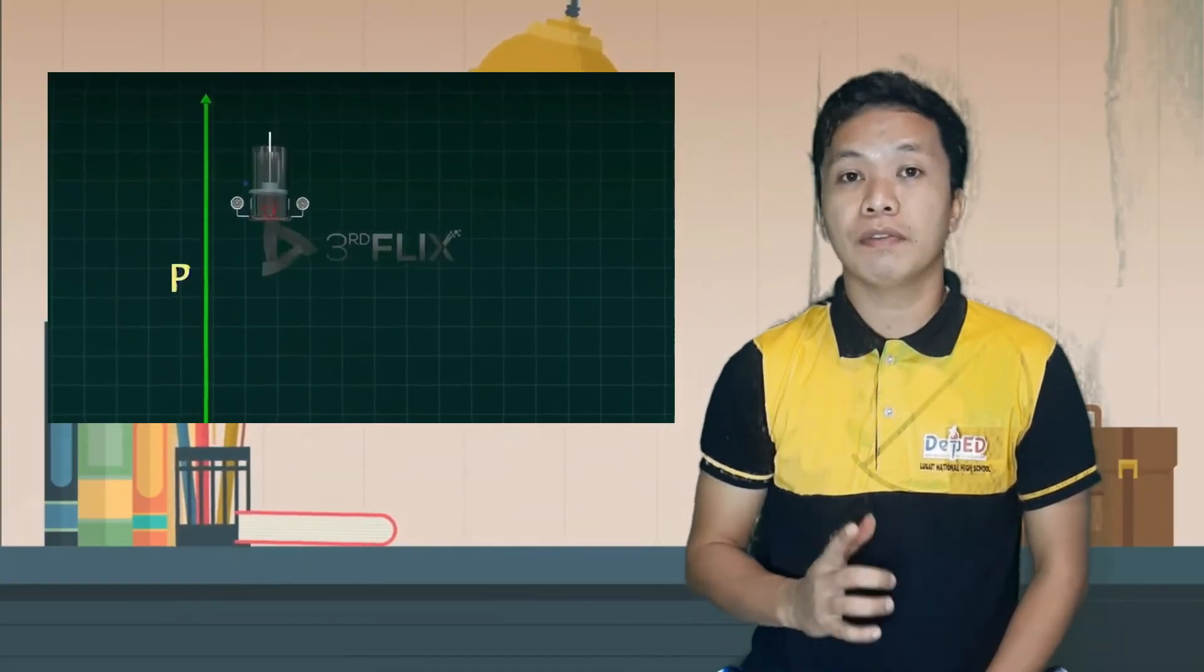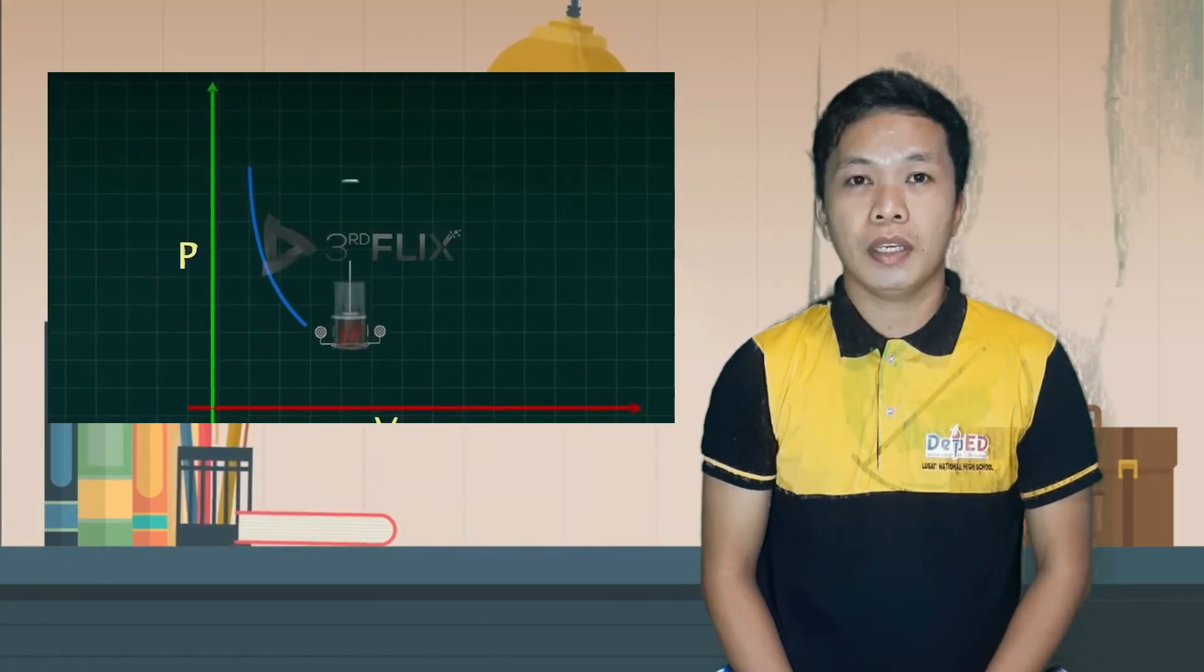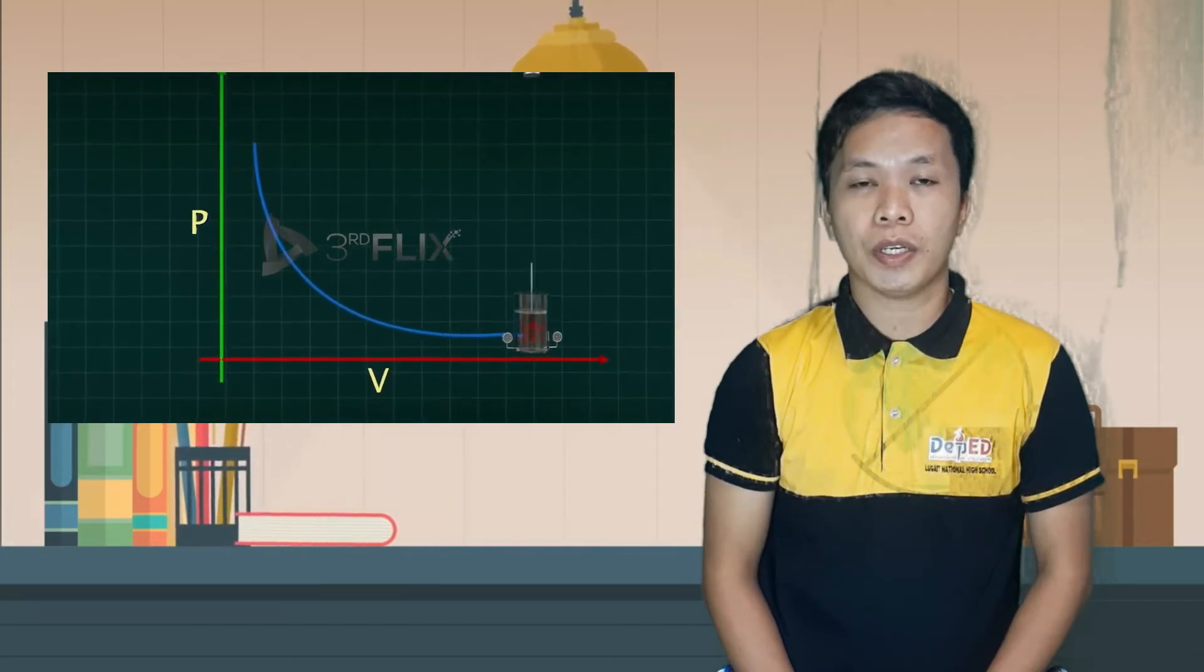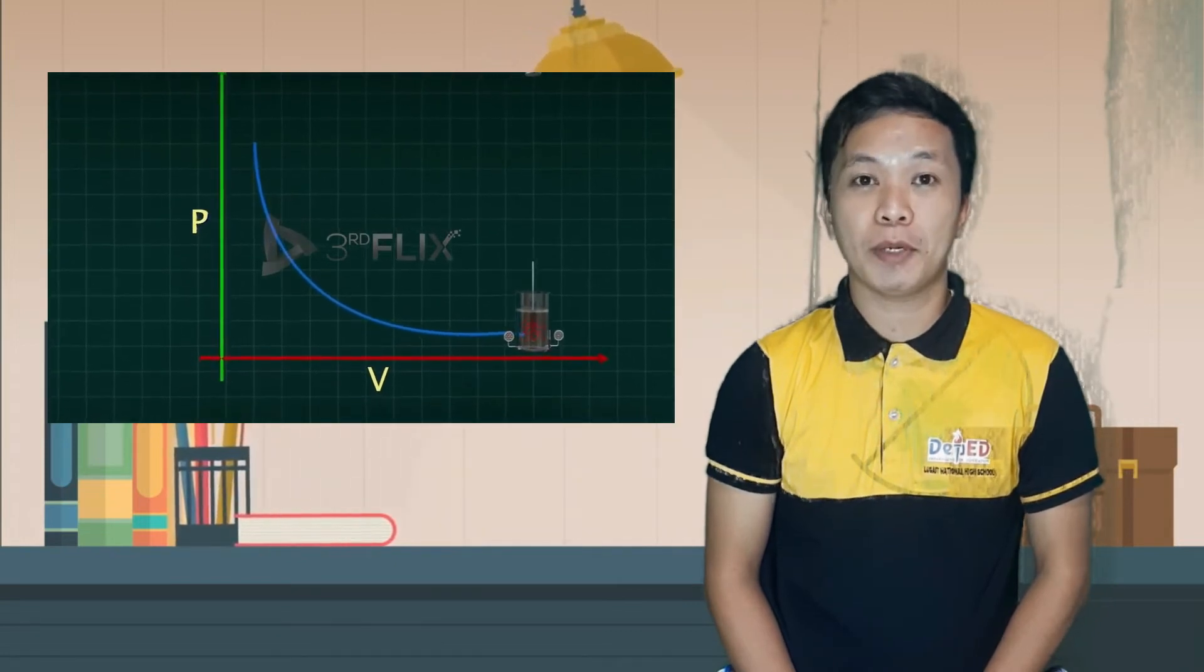This experiment is very similar to how our lungs and diaphragm works. Boyle's Law states that, at constant temperature, the volume of a gas is inversely proportional to the pressure that is applied on it. Now, let us observe this graph between pressure and volume. For a fixed amount of gas at constant temperature, if we plot the graph between P and V, where P is the pressure and V is the volume, we get a curve line known as hyperbola.